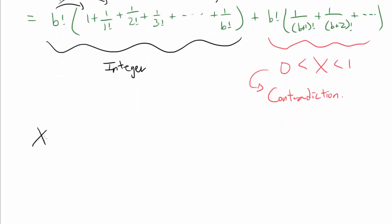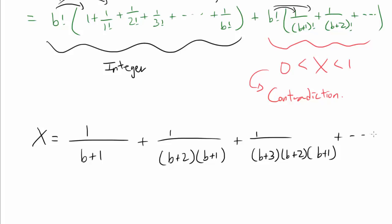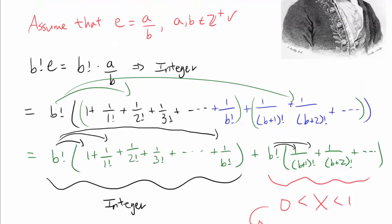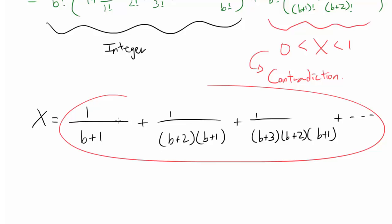So we know X is this entire second part. If you distribute B factorial to each term, we get: 1 over (B+1), plus 1 over [(B+2)(B+1)], plus 1 over [(B+3)(B+2)(B+1)], and so on. Because B is a positive integer, we are adding a bunch of positive terms, so X has to be greater than 0. So we have the first inequality justified.